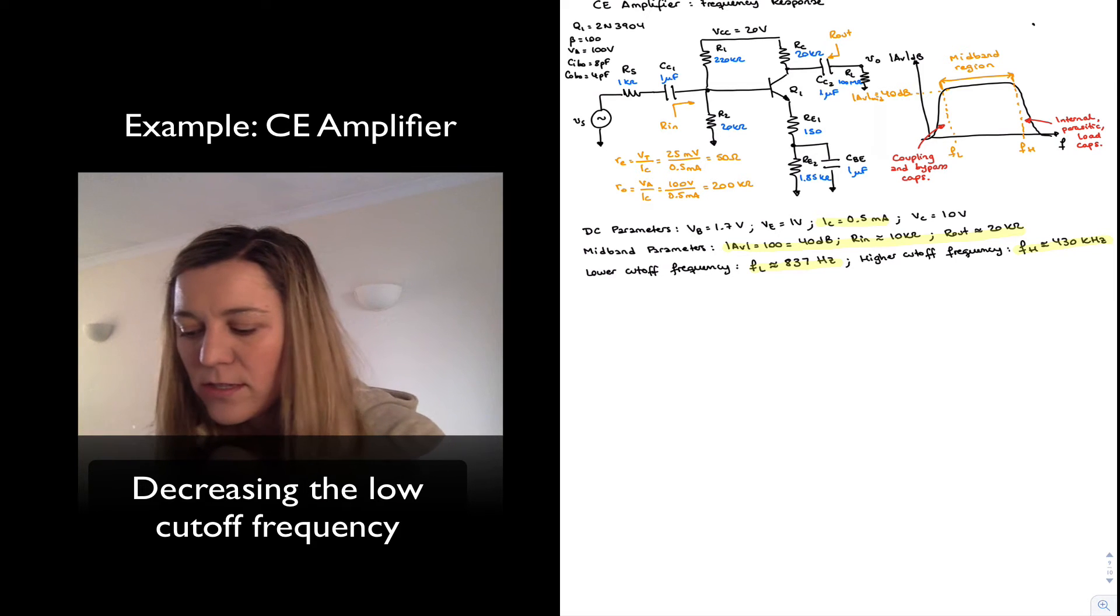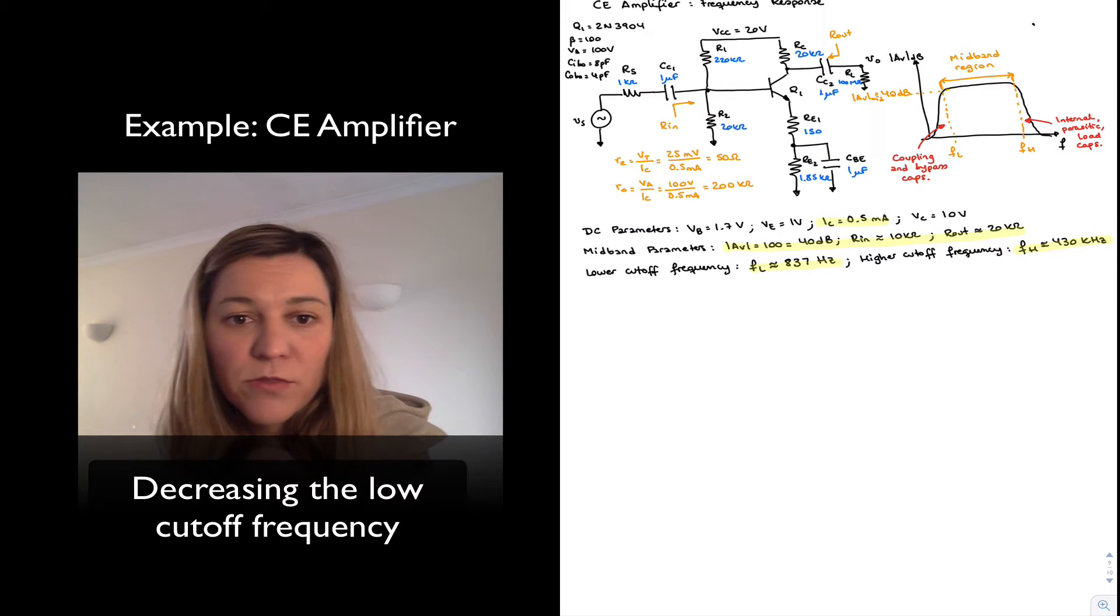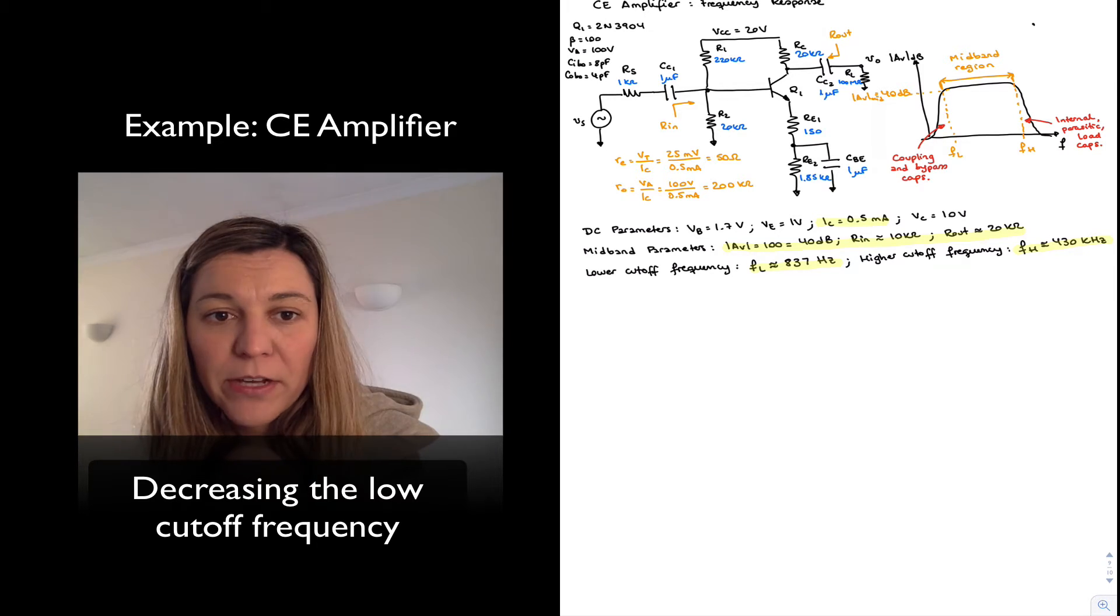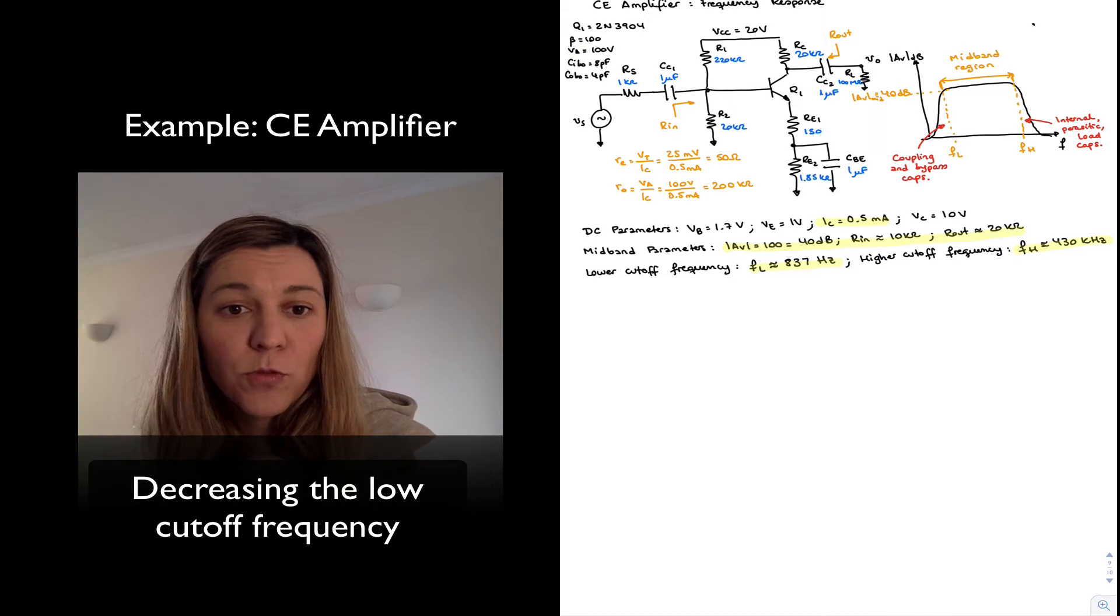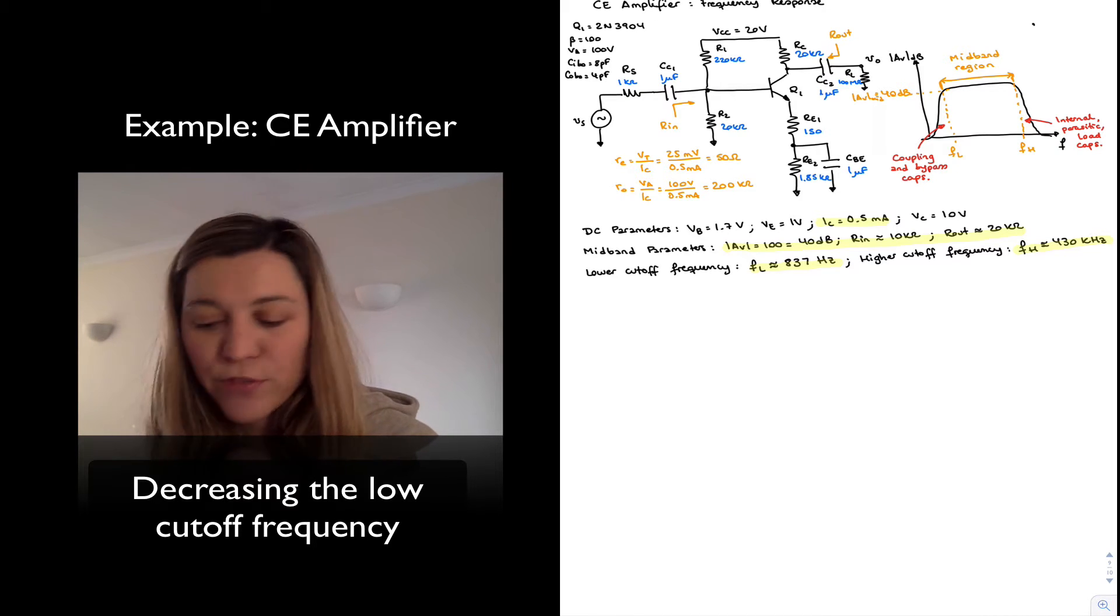Hello. So we have just analyzed the frequency response of a common emitter amplifier, and now I'm going to see how we can tweak the circuit in ways that are going to affect the frequency response and see what effect those changes will have on the location of the low and high cutoff frequencies.